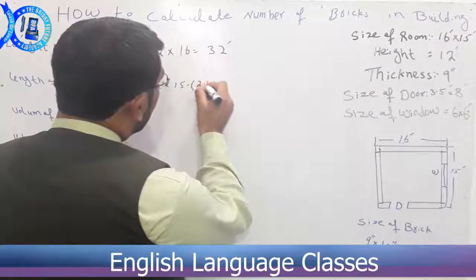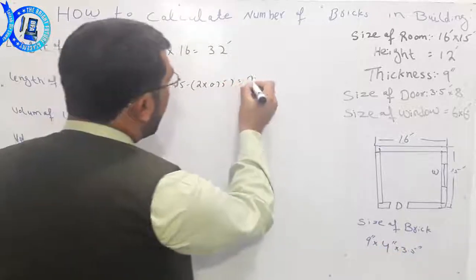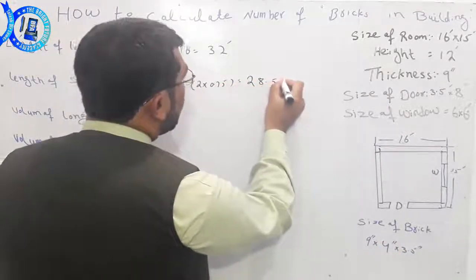This is just by minus two, that will be 0.75. This is just 28.5 feet.